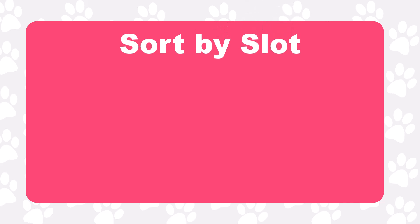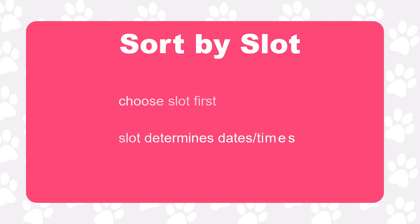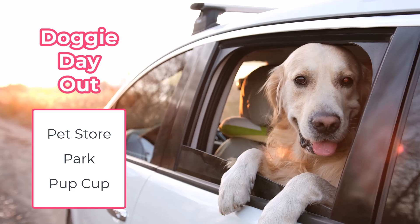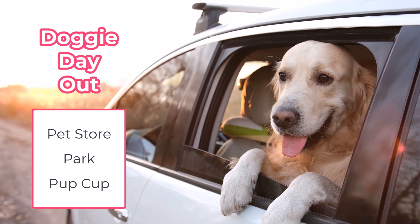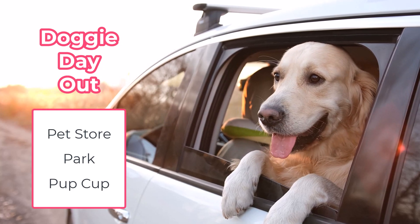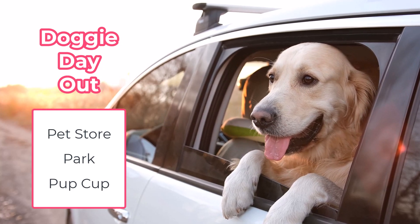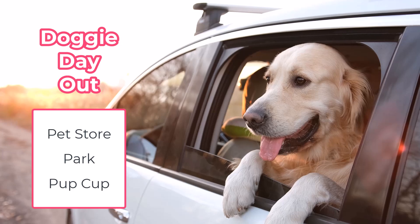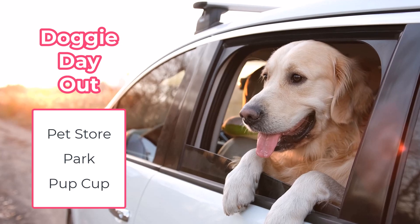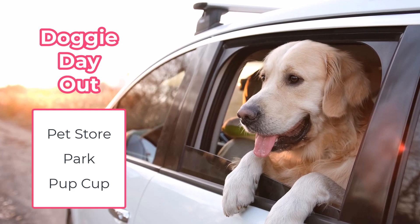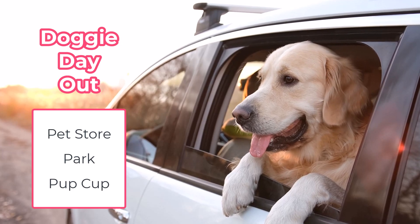The Sort By Slot format prompts the user to choose the slot first. This can be used when the slot determines what dates or times are available. Sort By Slot is a great feature for the Doggy Day Out program where volunteers will select a dog and that will determine which day or time the dog is available.